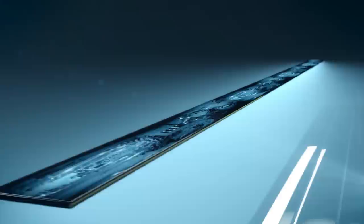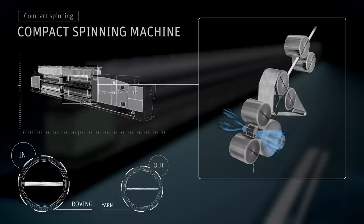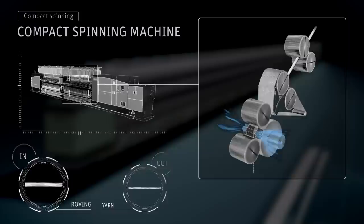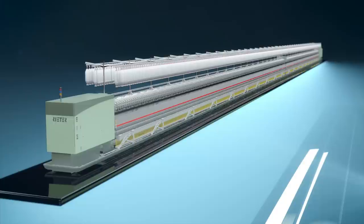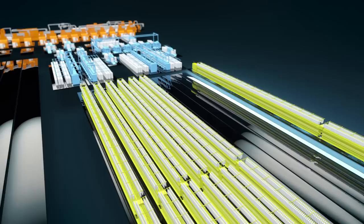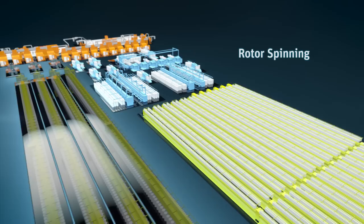Also in compact spinning, the roving frame is used for preparation. The roving enters the drafting unit of the compact spinning machine in which it is drafted to the required yarn count. The fibers are compacted by vacuum. Protruding fibers are bonded and yarn hairiness thus reduced. In this way, Kom4R Compact Yarn is created.